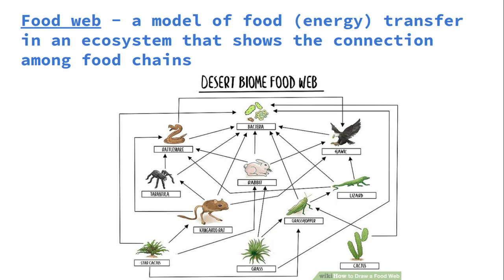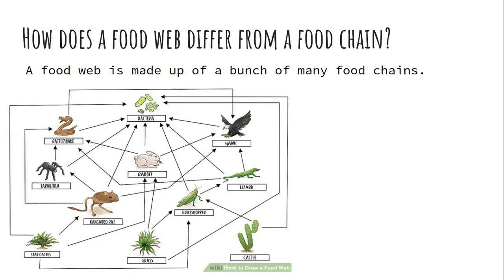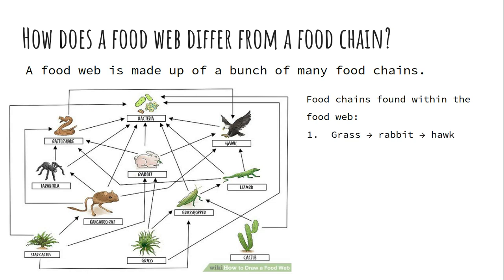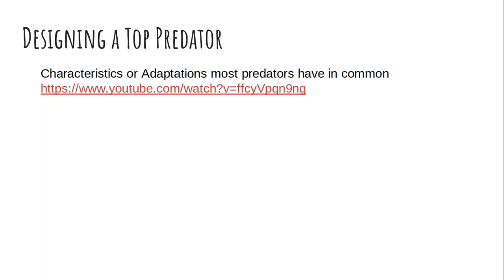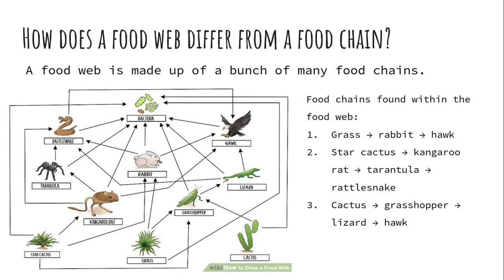We're going to model food webs and talk about the transfer of energy throughout. A food web takes food chains and shows all the connections — all the different ways animals eat each other — making a web-like structure. It differs from a food chain because it's made up of multiple food chains connected together, showing energy transfer across all of them.